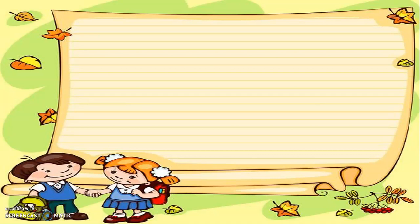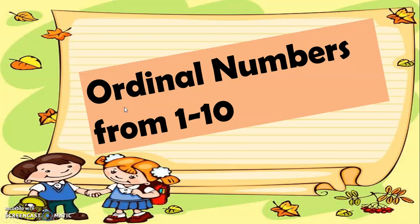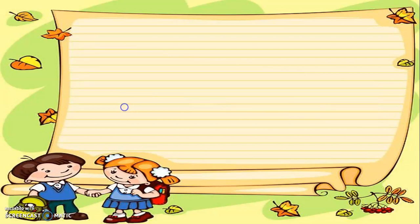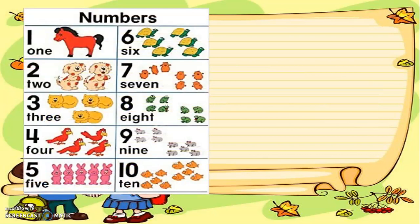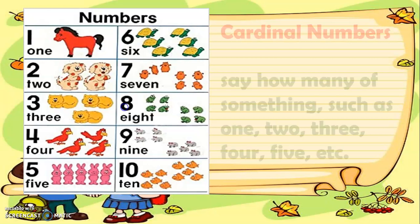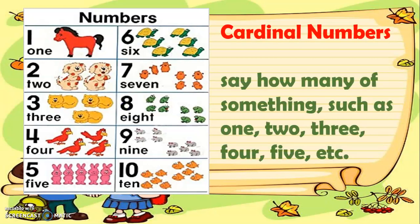Good day, Grade One! Today we're going to have a lesson that we'll surely have fun with, and the title of our lesson for today is ordinal numbers from 1 to 10. To start, let's talk about the numbers that we commonly use every day — we call them cardinal numbers. Cardinal numbers say how many of something, such as one, two, three, four, five, etc. Cardinal numbers are numbers that help us when we're counting.